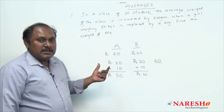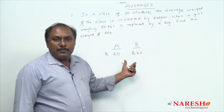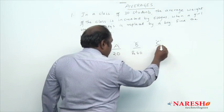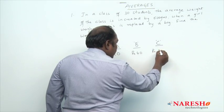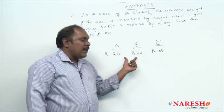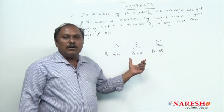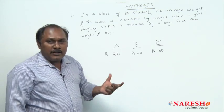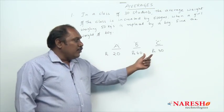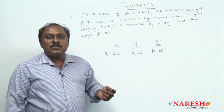Now let us extend this example. A and B have an average of 30 rupees. Suppose a third person C joined with 30 rupees. Then what is the average money with A, B and C? A and B already have an average of 30 and C joins with 30, so the average should definitely be 30 only. The point here is: if a new observation is the same as the previous average, the average does not change.